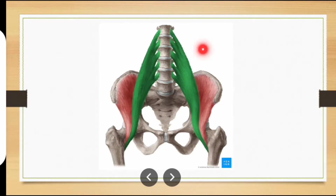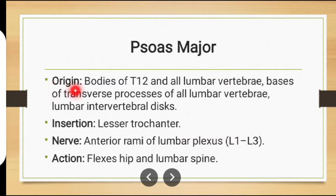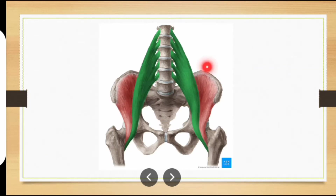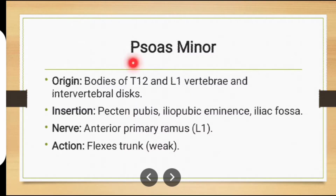The next muscle is psoas major muscle. The muscle in green is psoas major muscle. Origin: bodies of T12 and all lumbar vertebrae, bases of transverse processes of all lumbar vertebrae, and lumbar intervertebral discs. Insertion: lesser trochanter. Nerve supply: anterior rami of lumbar plexus. Action: hip flexion and lumbar spine flexion.